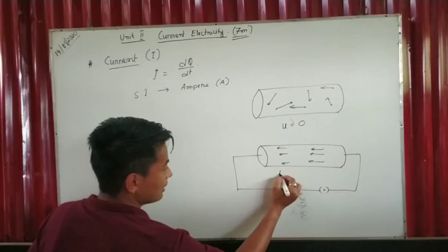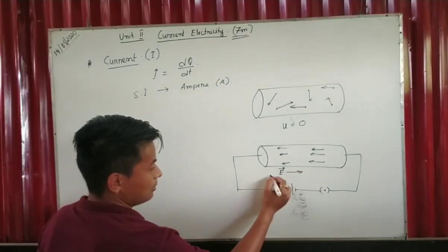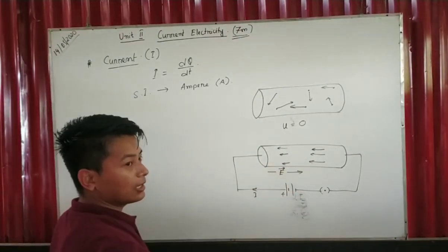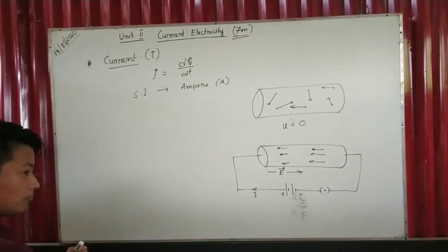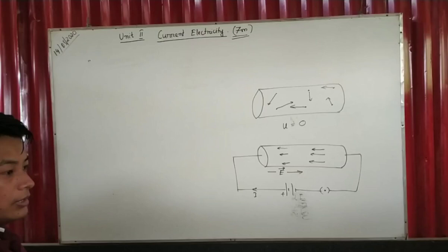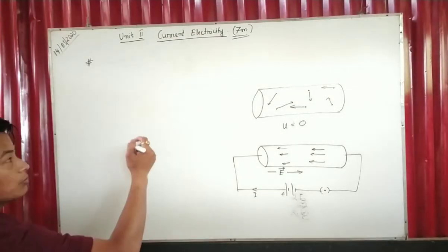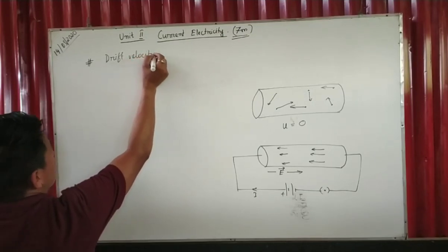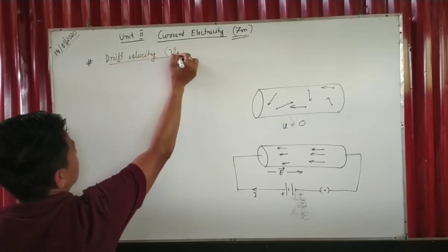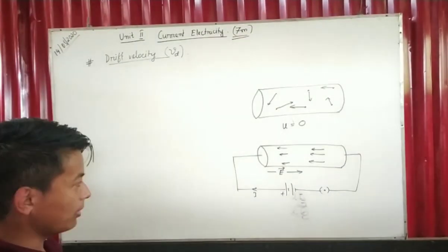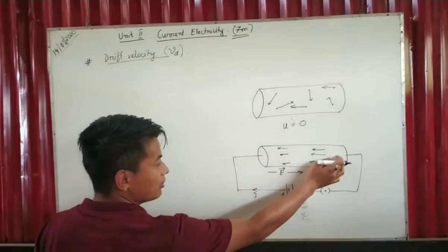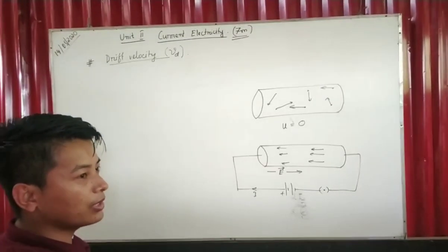When the battery is applied, it will be positive and negative. The current direction and the electron direction are opposite. This is the current direction of the conductor, and this is the drift velocity — the current direction is determined by the drift velocity.